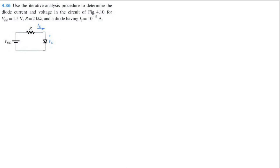Problem 4.36 from Microelectronics Circuits 8th edition by Sedra and Smith. Using the iterative analysis procedure to determine the diode current and voltage in the circuit here for VDD equals 1.5 volts, R equals 2 kilo ohms, and a diode having a saturation current of 10 to the power of negative 15 amps.